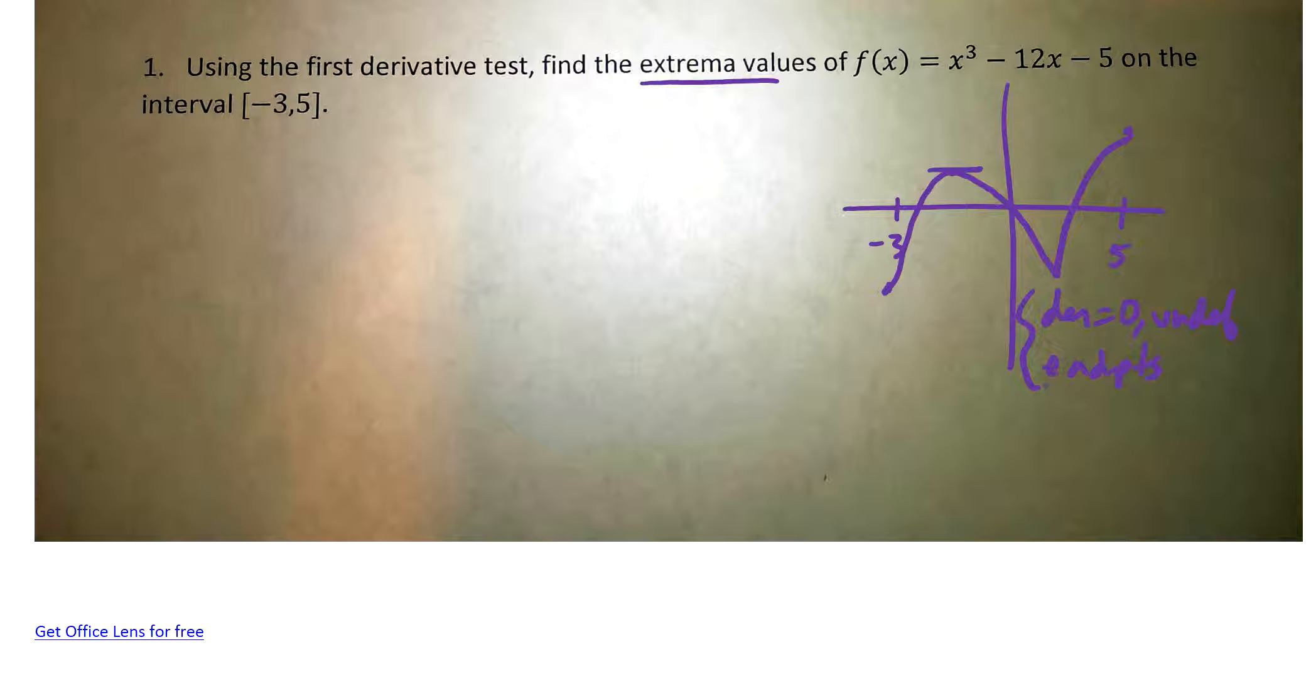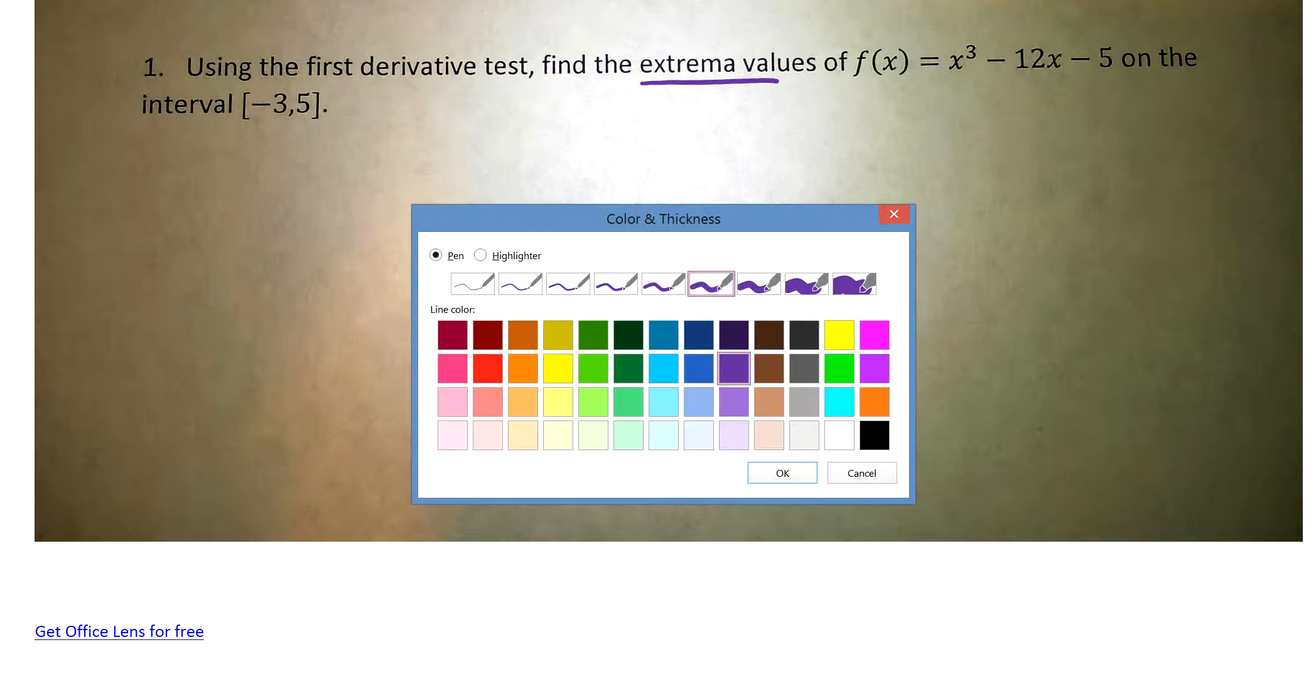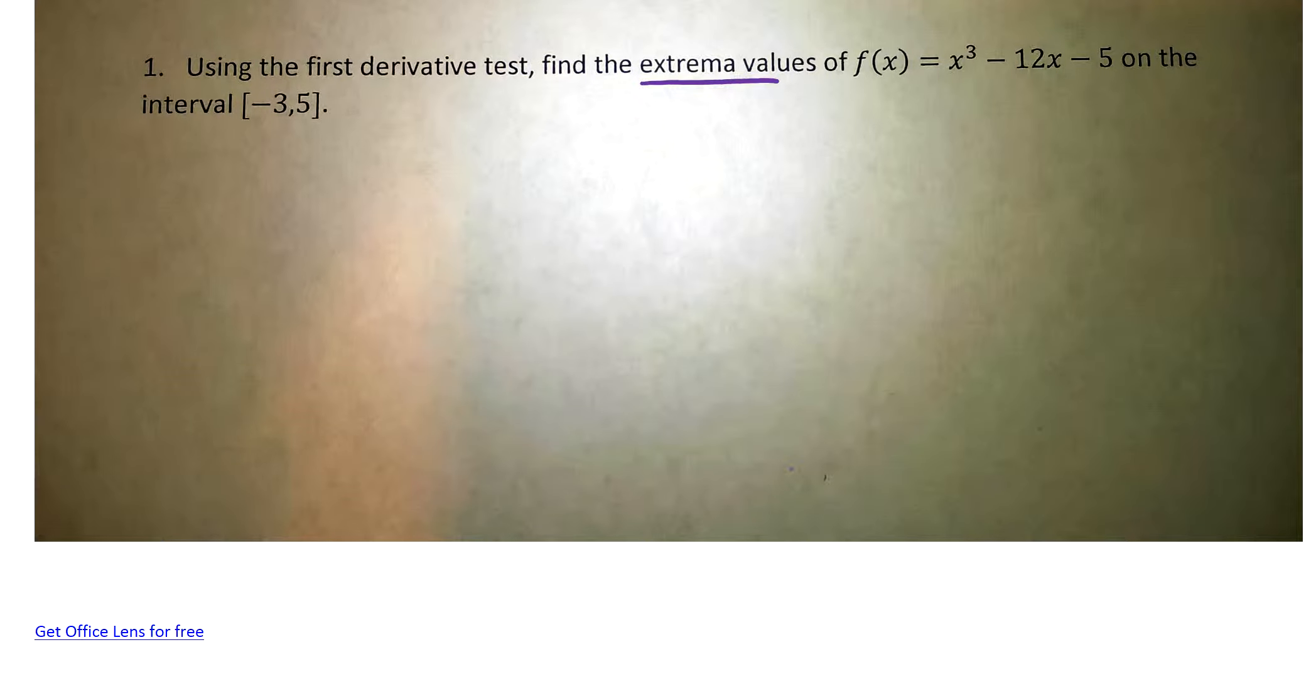So I'm probably going to use this space over here, so I'm going to erase this, and then we will go from there. Okay, so here we go. Let's find the critical points first. So, f prime of x, we'll try to do this as neat as possible. Let's see, that'll make it a little bit easier here. Extreme values. f prime is 3x squared minus 12.